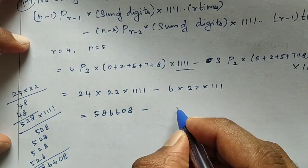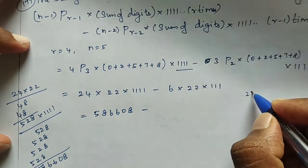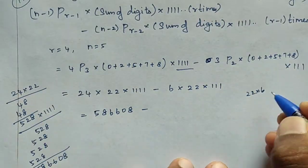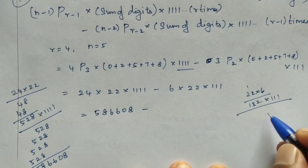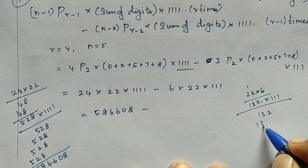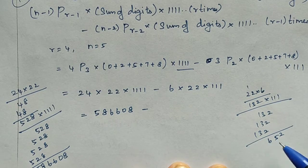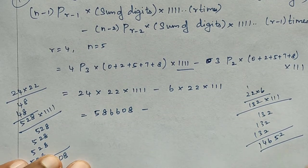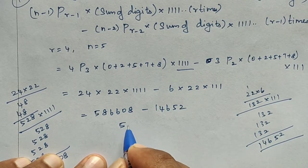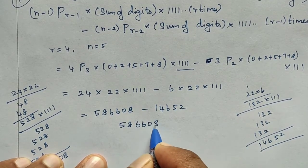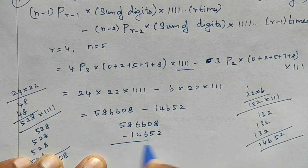Now for the second term: 6 × 22 = 132. Then 132 × 111 = 14652. Adding: 132, 132, 132 gives 14652. So we have 586608 minus 14652.